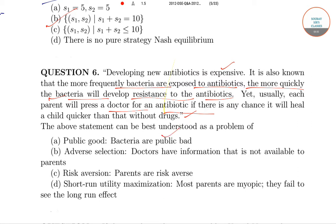The public good - bacteria is a public bad. Adverse selection - doctors have information that is not available to the parents. Risk aversion - the parents are risk averse. And short-term utility maximization - most parents are myopic and they fail to see the long-run effect.